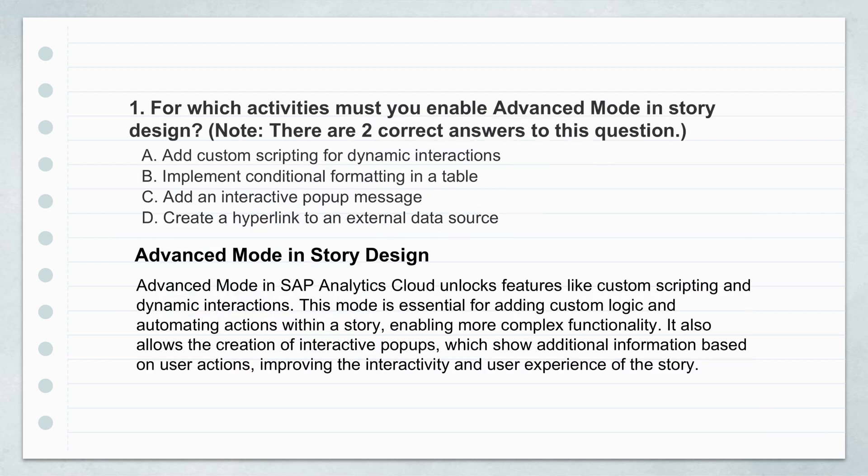First question: for which activities must you enable advanced mode in story design? There are two correct answers. Your options are A, add custom scripting for dynamic interactions; B, implement conditional formatting in a table; C, add an interactive pop-up message; D, create a hyperlink to an external data source. A and C both sound like they need something more than just the basic interface — and you'd be right. The correct answers are A and C.